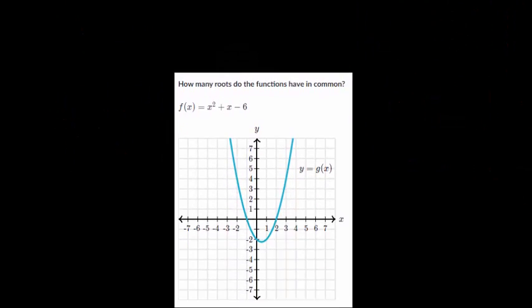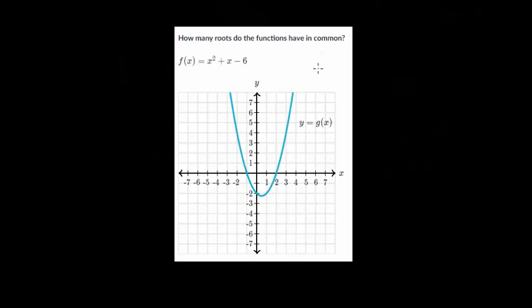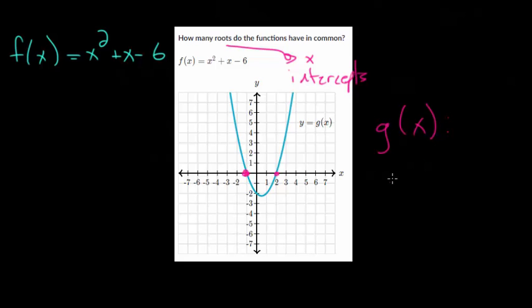And let's do one last problem. So this one, again, is asking about the roots that they have in common, which means we're going to have to factor this. So we have f of x is x squared plus x minus 6. And for g of x, you can just visually see the roots. Remember, roots, that's just, we're looking at the x-intercepts. And here, the x-intercepts for g of x are going to be x equals 2 and minus 1.